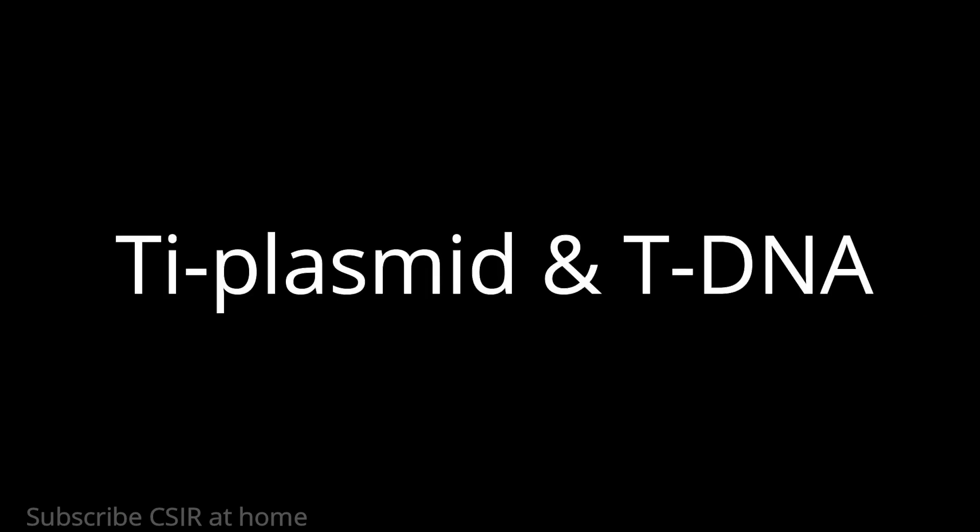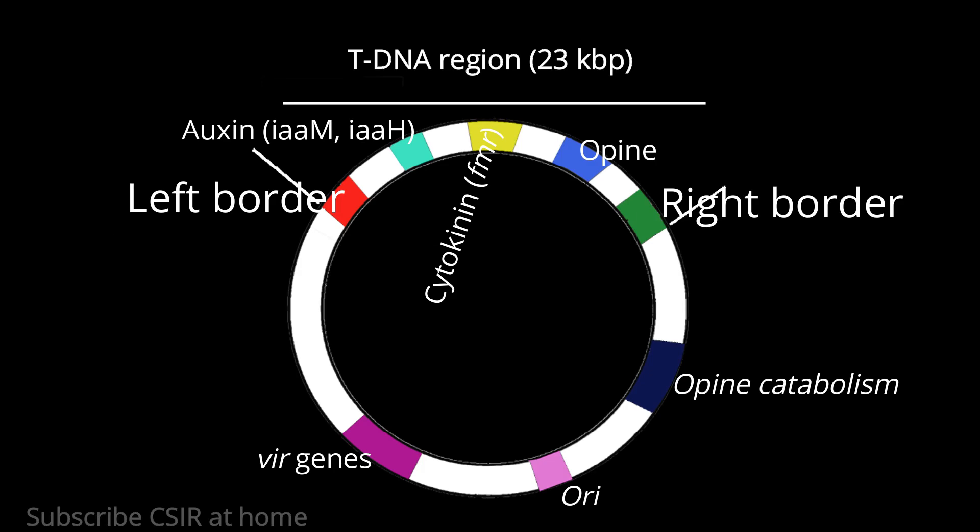What is the Ti plasmid? Virulent bacteria contain plasmids, and Agrobacterium tumefaciens also harbors large plasmids. The ability to use and synthesize opines is a plasmid-borne trait, and this plasmid is known as the tumor inducing plasmid. Its size is between 140 to 235 kilobase pairs.